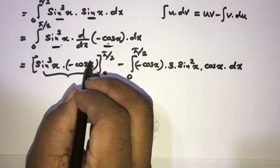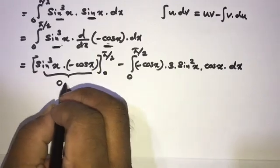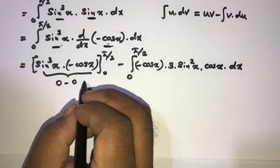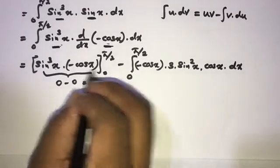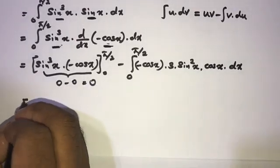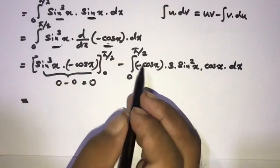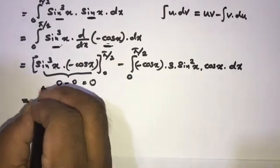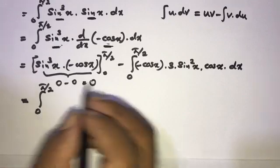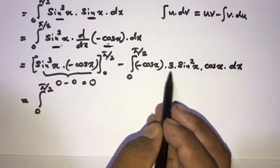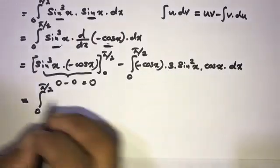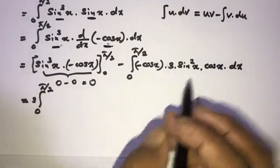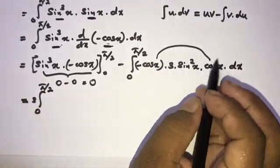Now we know the boundary term is going to be 0 because cosine of 5π/2 is equal to 0, and sine of 0 is equal to 0, so this is going to be 0. Minus times minus becomes plus, so we have plus the integral from 0 to 5π/2.